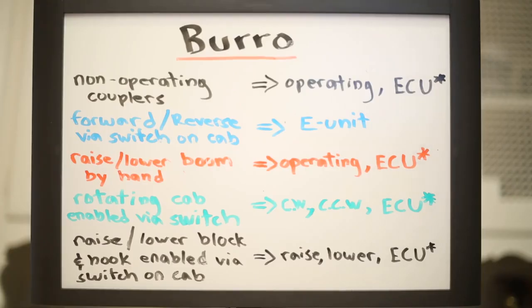What I'd like to see in the burrow crane for the Ultimate Trainset are the following features. I'd like to have electronically operating couplers, and I'd like to control them via the electronic control unit. I'd like to have the ability to change forward and reverse directions, and I'd like to do this by installing an E-unit.